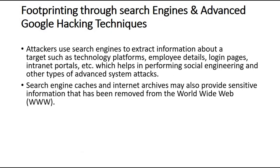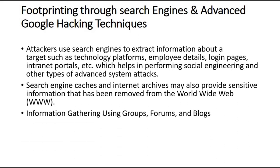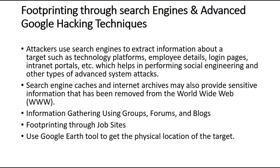Search engine caches and internet archives may also provide sensitive information that has been removed from the web — for example, the Wayback archive. We will also do practicals on that. Information gathering using groups, forums, and blogs is also useful. Footprinting through job sites is very important — you can collect information from LinkedIn, Glassdoor, Indeed, Naukri.com, and similar platforms. You can also use Google Earth to get the physical location of a target.